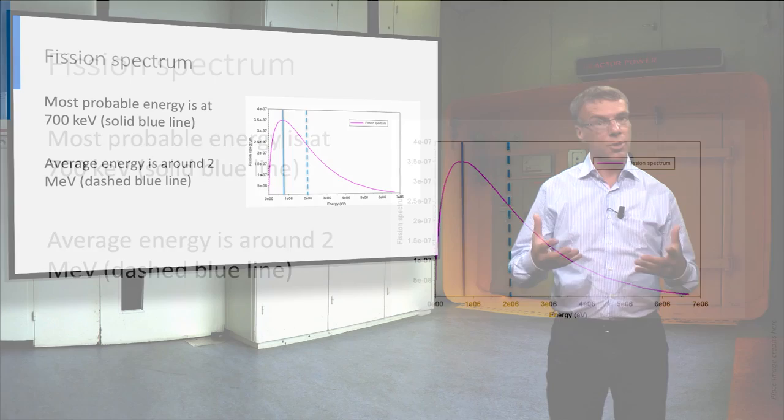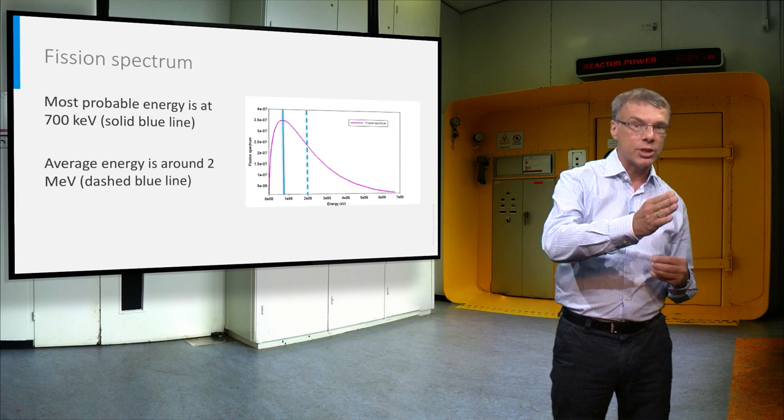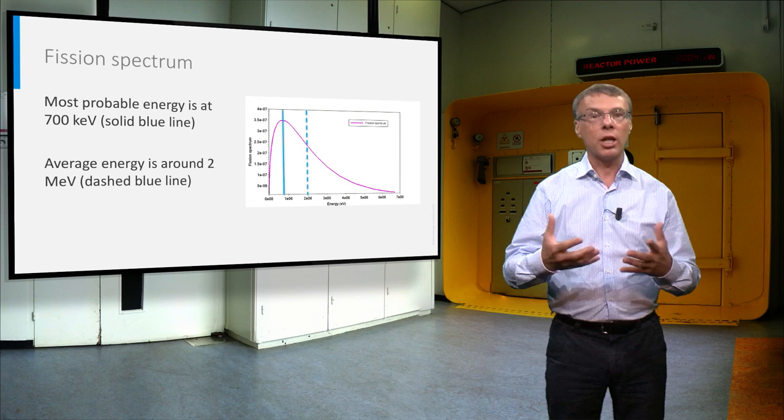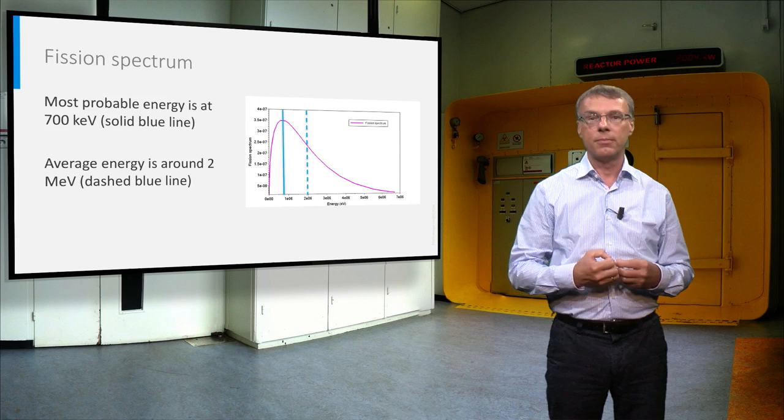Previously you have heard about fissile nuclides, like uranium-235, which have a very high probability to fission when they absorb a thermal neutron. To enhance fission, we have to slow down the fission neutrons to energies below 1 eV. Because neutrons lose a lot of energy when they collide with hydrogen atoms, water is a very good moderator.